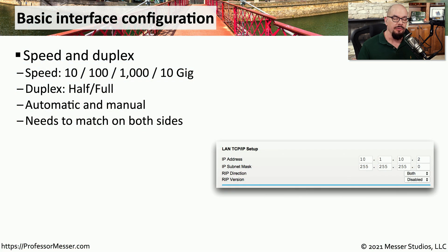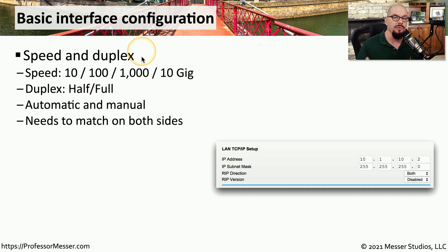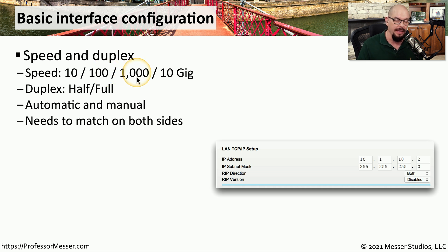One fundamental configuration is the speed and duplex of the interface. The speed refers to the speed of the Ethernet link — this would be a 10 megabit, 100 megabit, 1000 megabit or 1 gig, and a 10 gig connection.